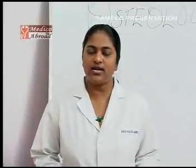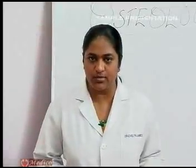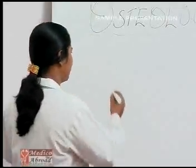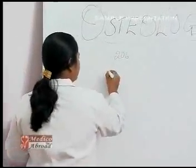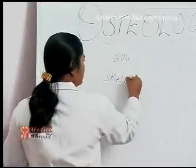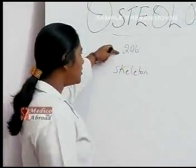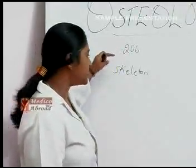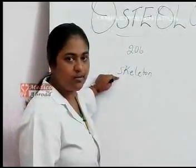The study of bones is called osteology. There are about 206 bones in the human body. The arrangement of the bones inside the human body is called a skeleton. There are about 206 bones which are arranged as a skeleton in the human body.